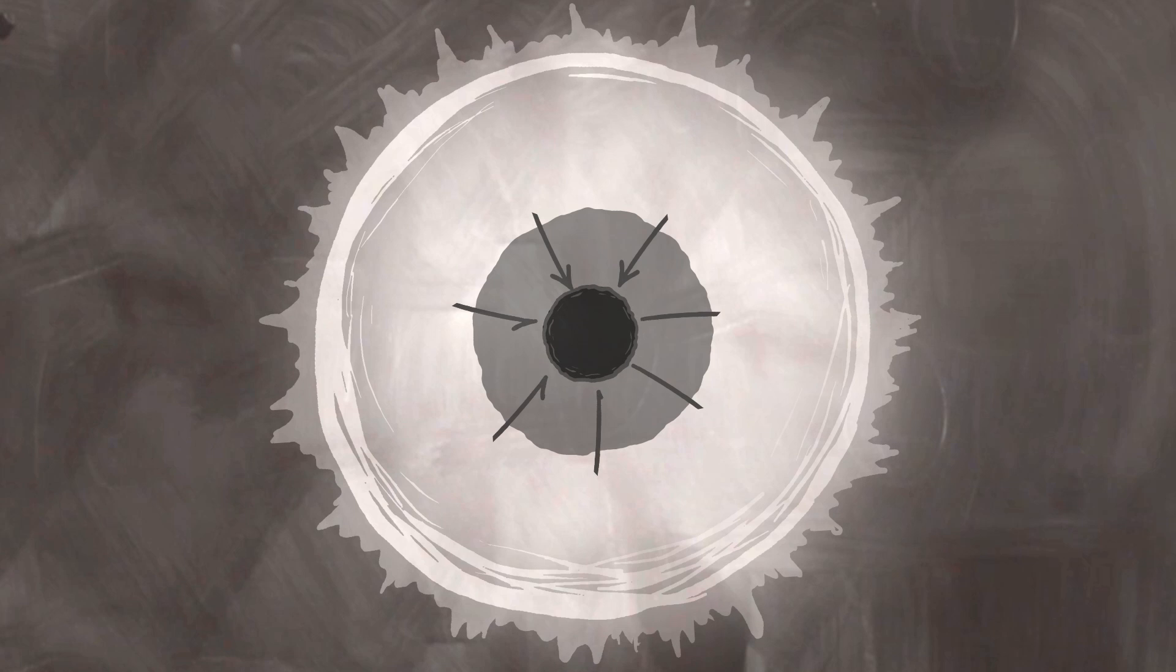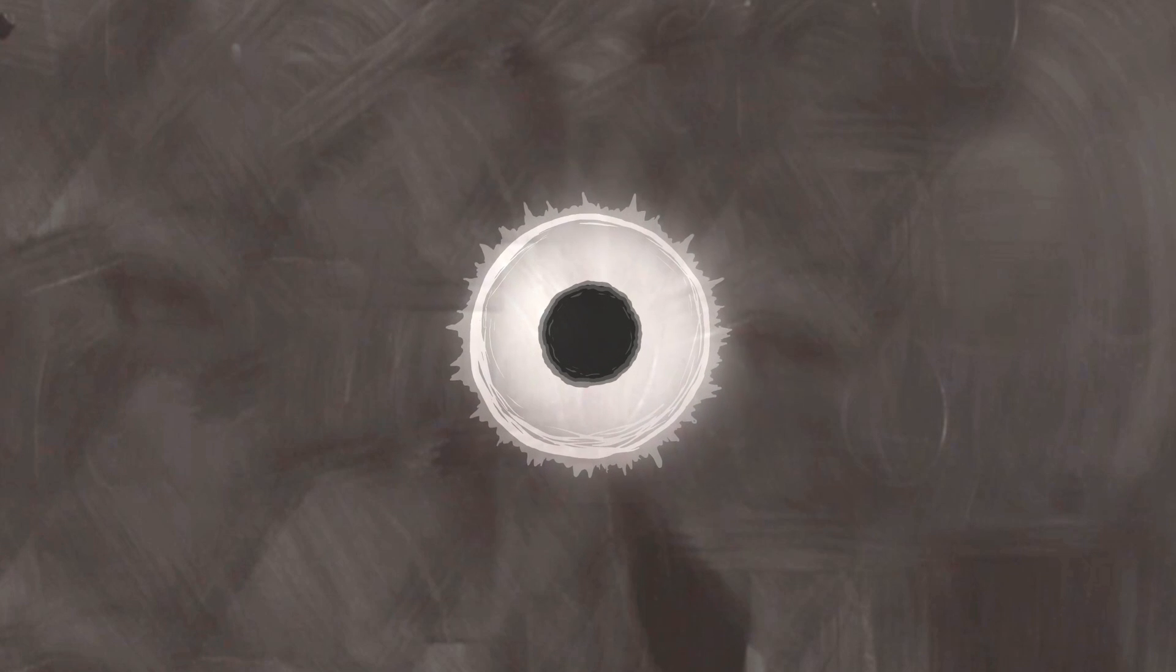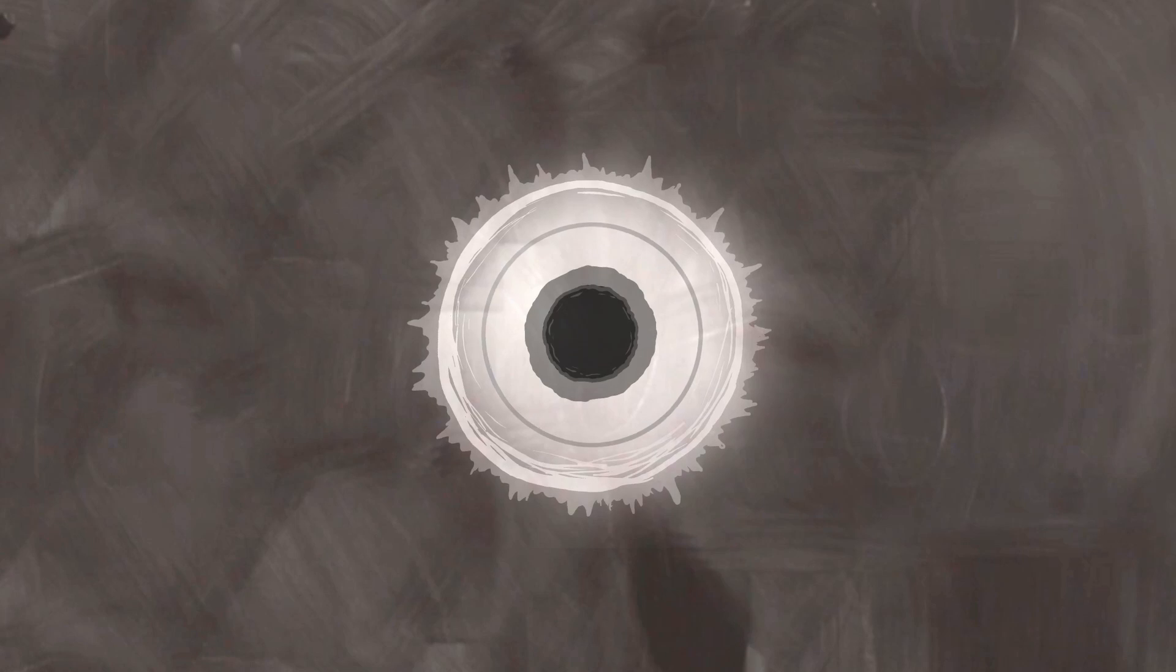But the rest of this ball of iron is now a void, so the rest of the star rushes in to fill the hole, bounces off the goo in the core, and sends a ripple, a shockwave, through the rest of the star.